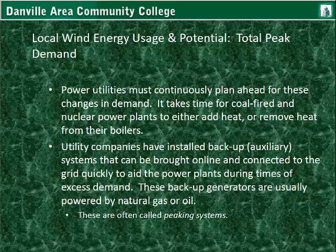Power utilities must continuously plan ahead for the changes in demand. It takes time for a coal-fired power plant or a nuclear power plant to add heat or remove heat from their boilers. Utility companies have installed backup or auxiliary systems that can be brought online and connected to the grid fairly quickly, in case there's excess demand. These backup generators are usually powered by natural gas or oil, and they are often called peaking systems.